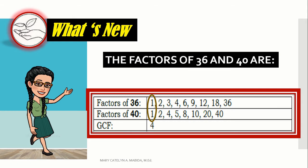Now, we identify the different common factors, which are 1, 2, and 4. And finally, we have the greatest common factor of 36 and 40 as 4.